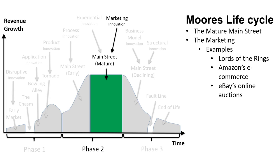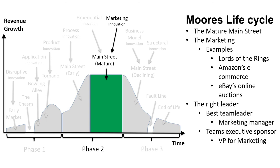Marketing innovation improves customer-touching processes. These can take the form of viral marketing like the Lord of the Rings movie trilogy's use of the web and trailers, consumer transactions like Amazon's e-commerce mechanisms, or online auctions as used by eBay. The right team leader is a marketing manager, and the ideal sponsor is the vice president for marketing. The marketing manager finds unique selling points that improve customer-touching processes, while the VP for marketing supports those improvements.